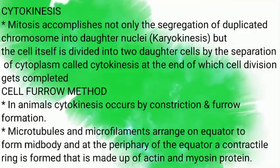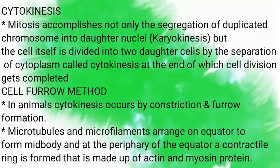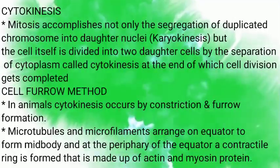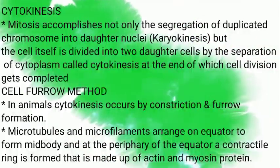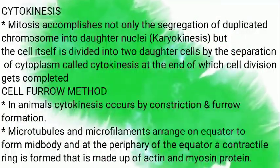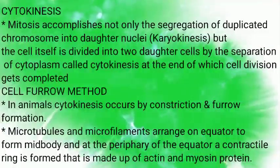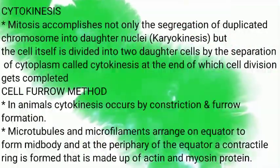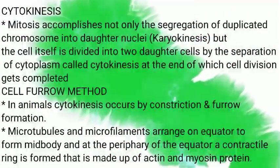Next topic: cytokinesis. Mitosis accomplishes not only the segregation of duplicated chromosomes into daughter nuclei, which is called karyokinesis, but the cell itself is divided into two daughter cells by the separation of cytoplasm, called cytokinesis, at the end of which cell division gets completed. After karyokinesis, the cell is divided into two daughter cells by separation of cytoplasm.